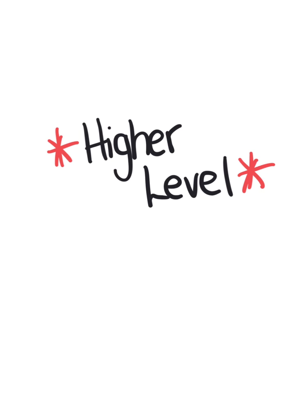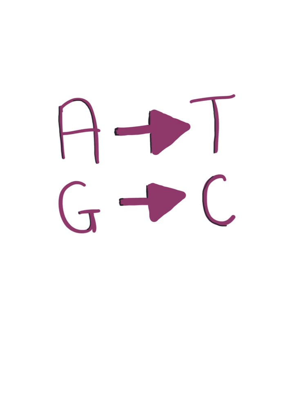The next couple of slides relates to higher-level biology. The bases A and G, so adenine and guanine, are known as purines. These are double ring bases, meaning that they are made up of two rings.